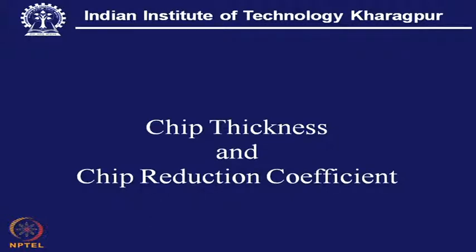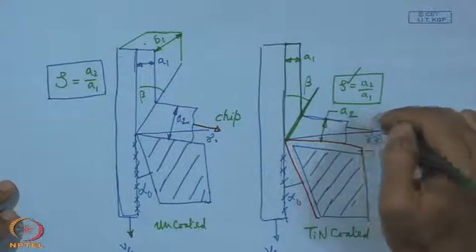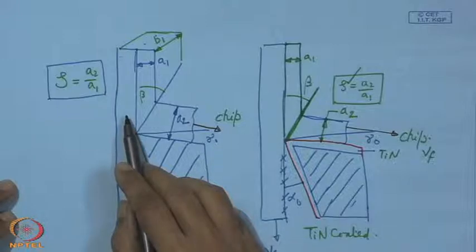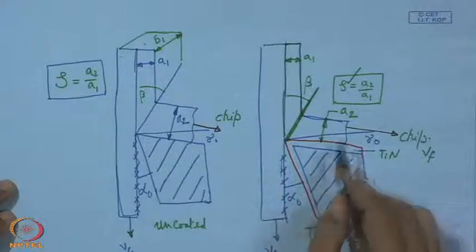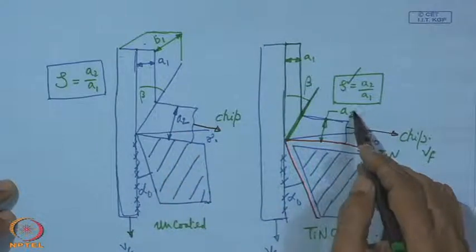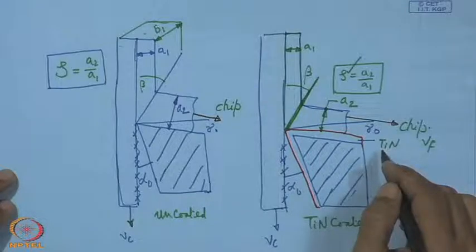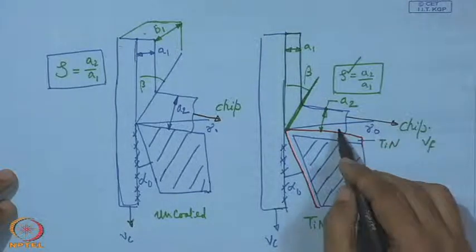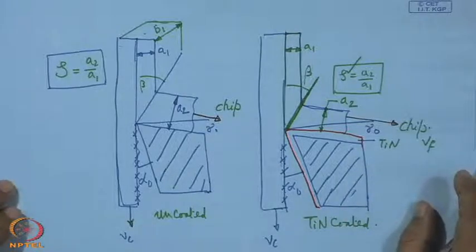Chip thickness and chip reduction coefficient serve as an index of machinability — that is, with what ease we can machine a material. The material may be a carbon steel. There may be a high value of friction, indicated by A2. When A2 is lower, that is a good sign — machinability has improved. In this case we expect TiN to improve machinability by reducing its welding characteristics, offering inertness at the chip-tool interface, and that goes in favor of machining.